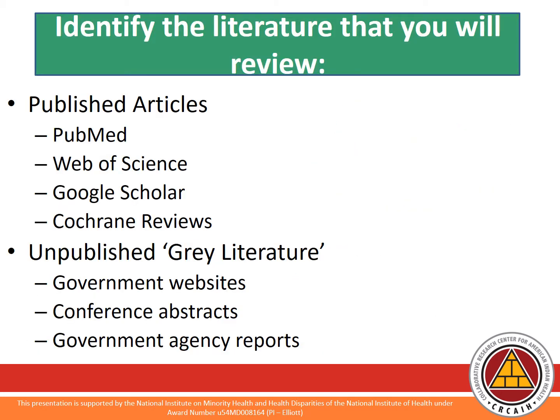Once you have your research question of interest, the second step is to identify the type of literature that you would like to review. For published articles, resources such as PubMed, Web of Science, Google Scholar, and Cochrane Reviews are good options. PubMed is a free resource developed and maintained by the National Center for Biotechnology Information at the National Library of Medicine. It provides free access to Medline, the National Library of Medicine's database of citations and abstracts in the fields of medicine, nursing, dentistry, veterinary medicine, healthcare systems, and preclinical sciences.